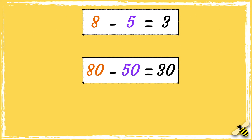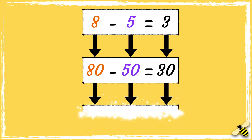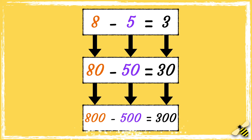So we use the related fact that 8 take away 5 equals 3 to work out that 80 take away 50 equals 30. And we can also work out that 800 take away 500 equals 300.